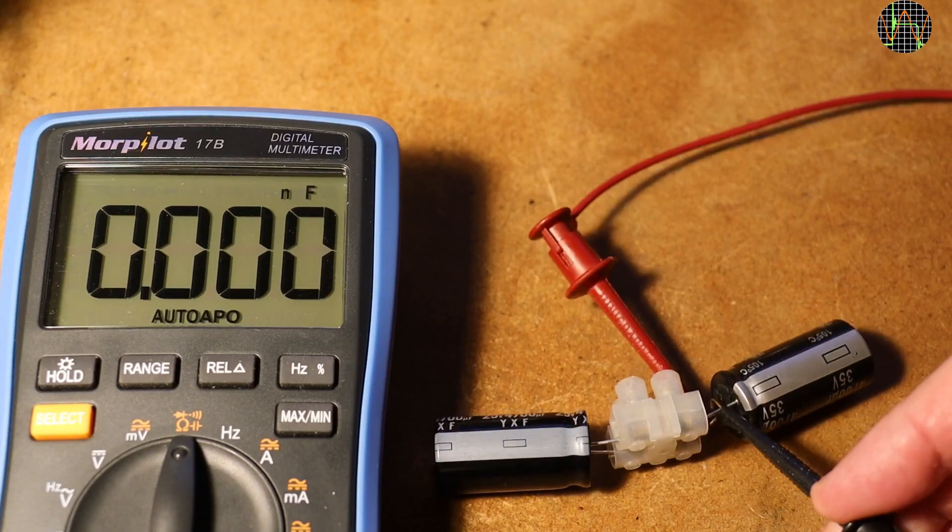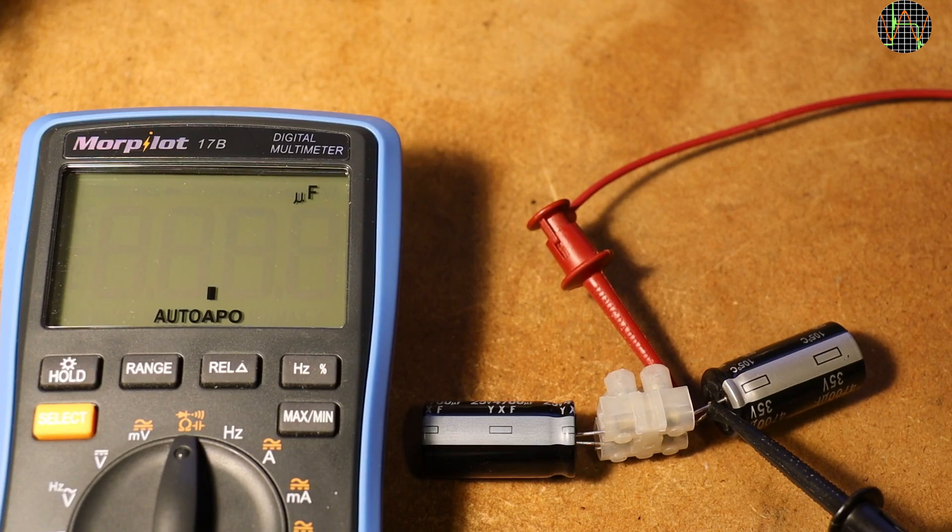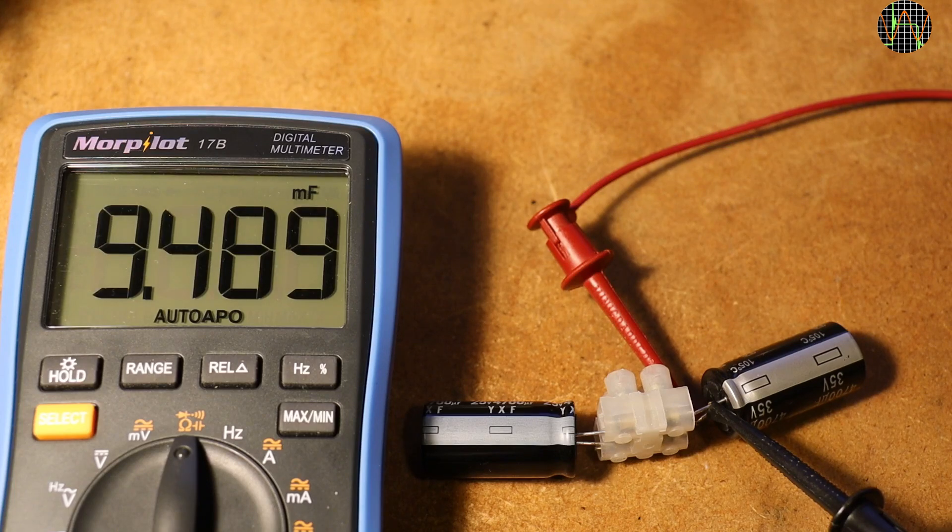As with all multimeters, measuring speed is slow for high values. But with 10 seconds here, it is noticeably faster than the Grenova which took 15 seconds for the same measurement.